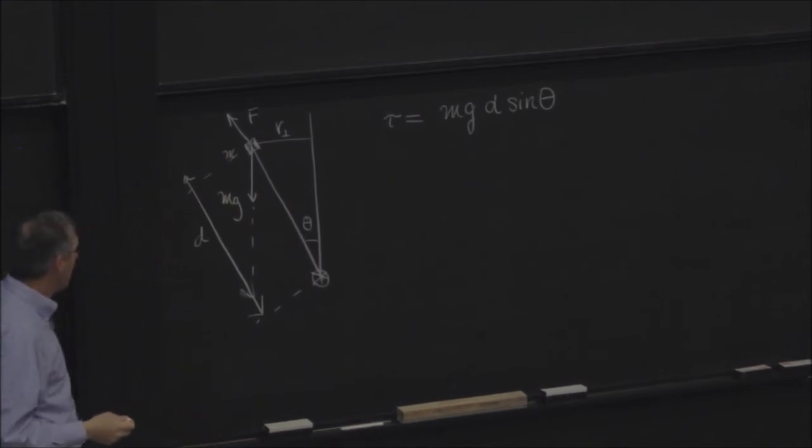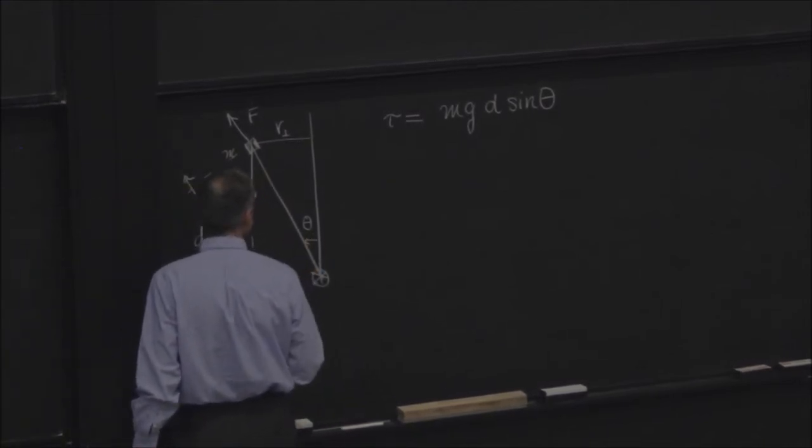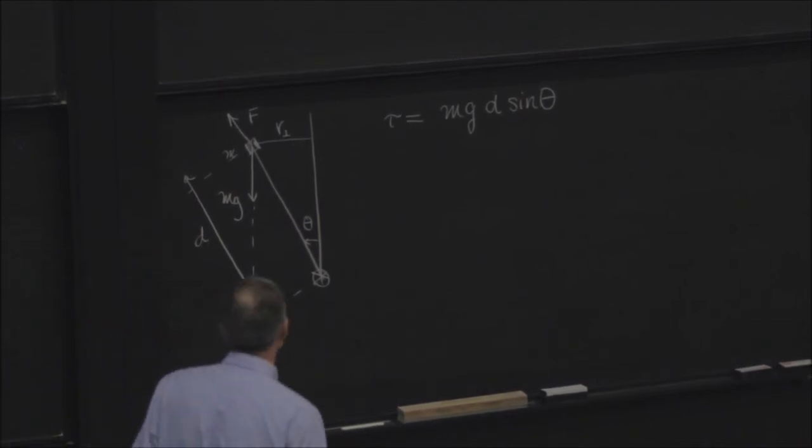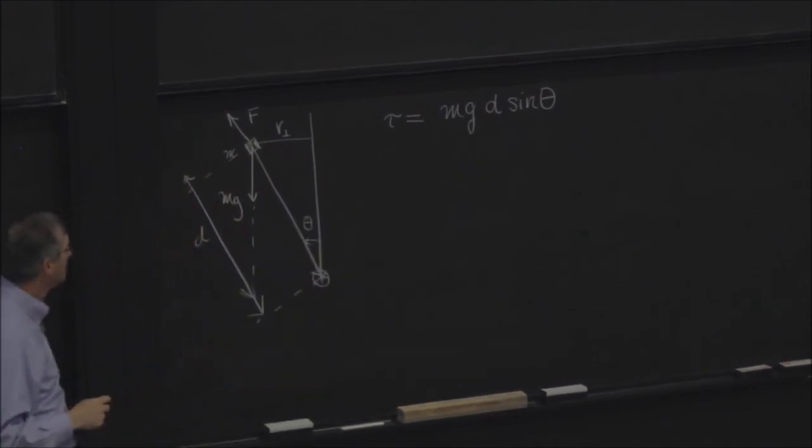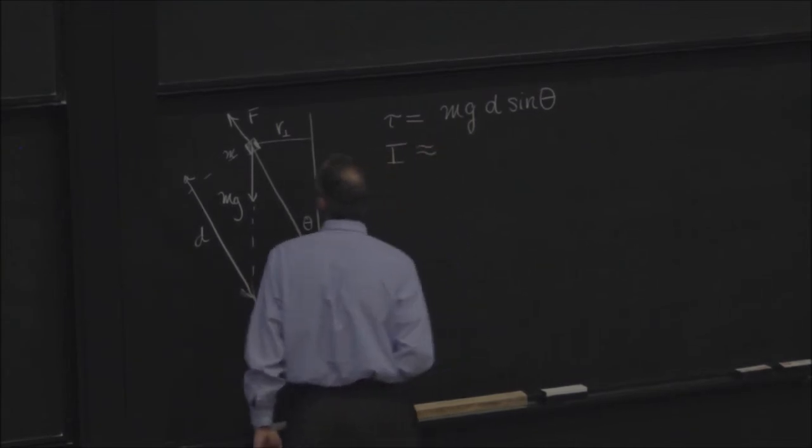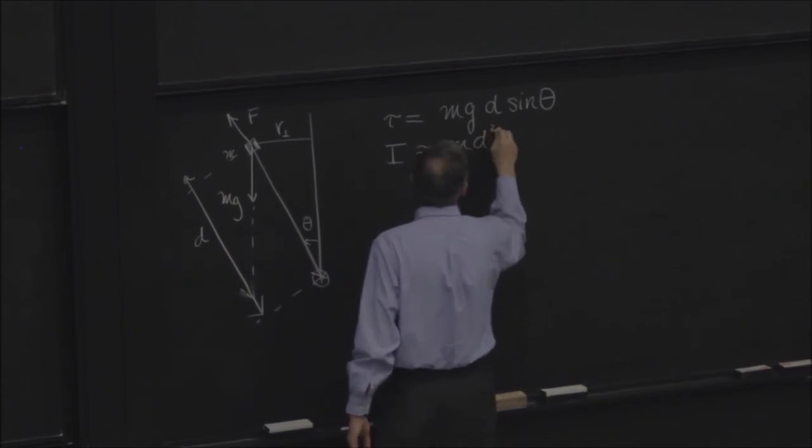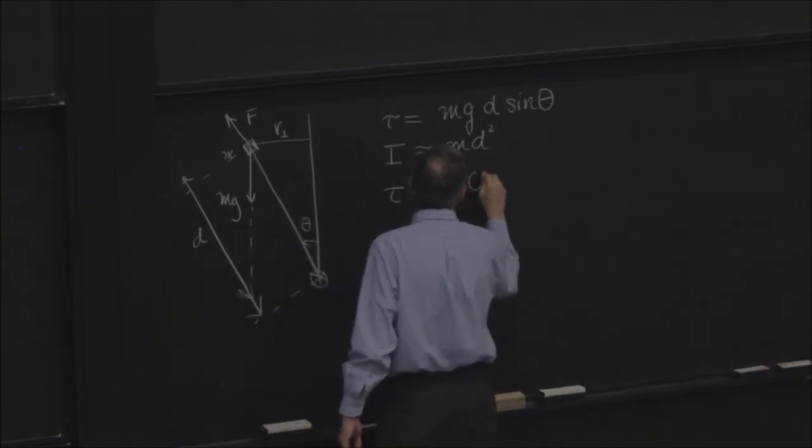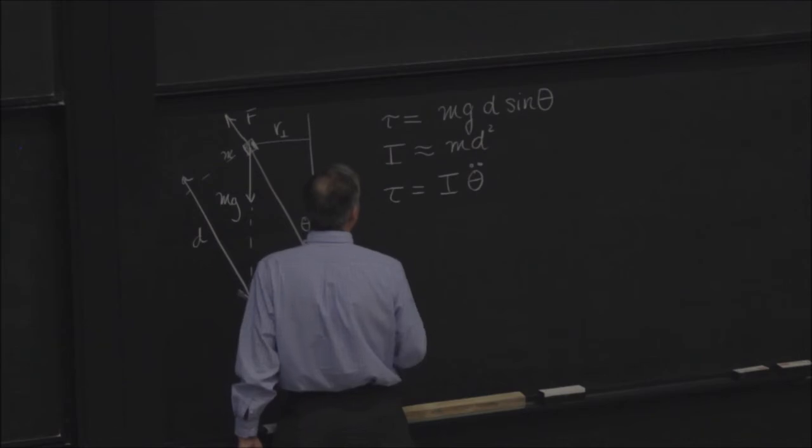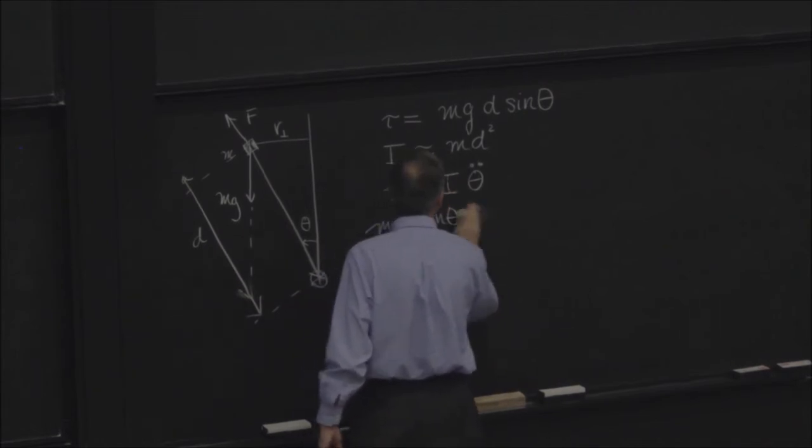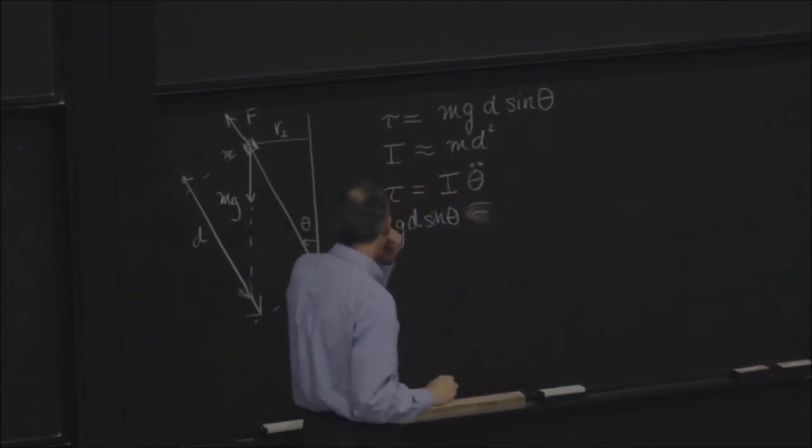And that looks like d sine theta. So the torque is equal to mg d sine theta. But if I pick this way as positive for theta, then that's right. Then I have the same direction for the torque. The moment of inertia, if I can neglect the moment of the rod, so the moment is about equal to m d squared. So the angular acceleration, torque equals I theta double dot.